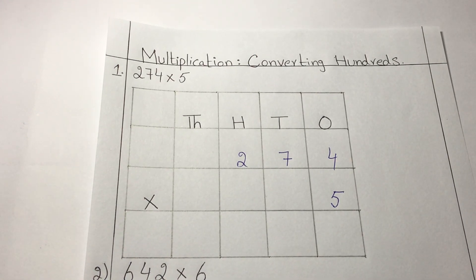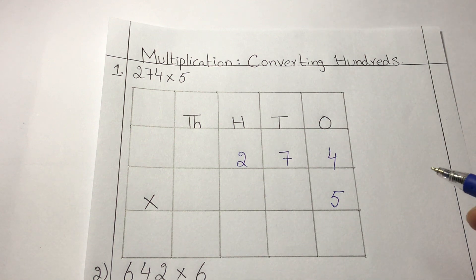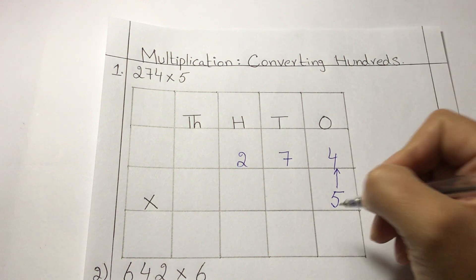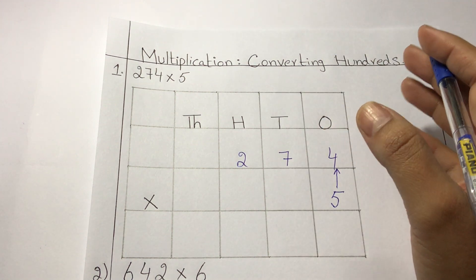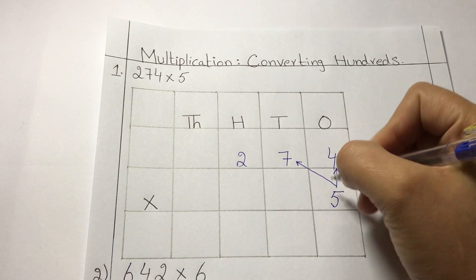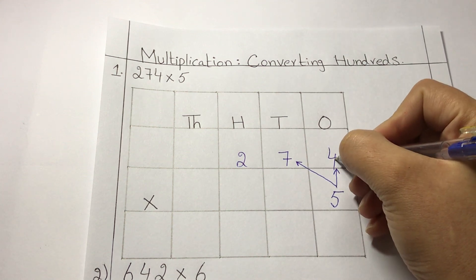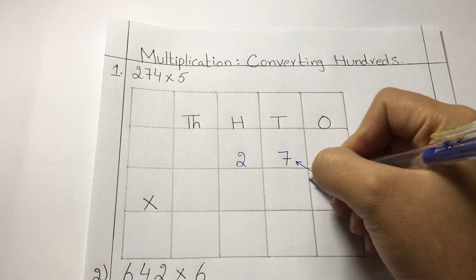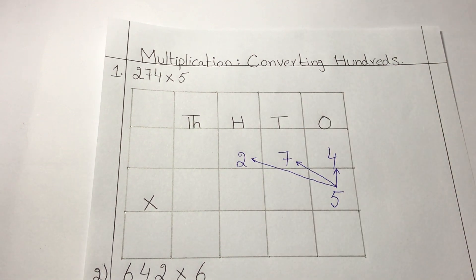Now, from which place do we always start the multiplication? We always start the multiplication from the ones place. I use arrows because it will make your multiplication easier and you will not leave any number. So first do the multiplication with the digit in the ones place — that is four. Then do it with seven in the tens place, and lastly with the digit in the hundreds column.